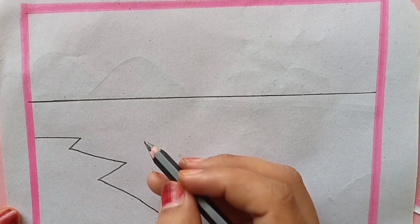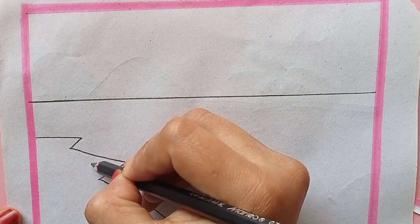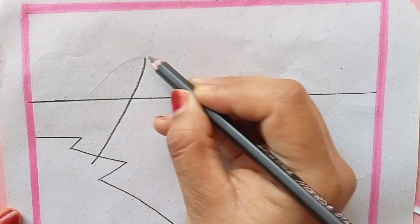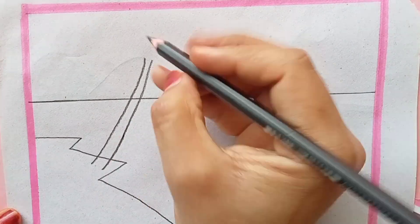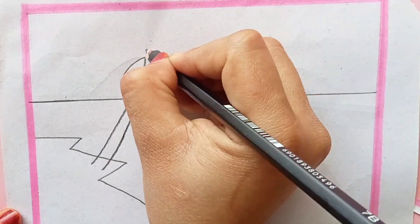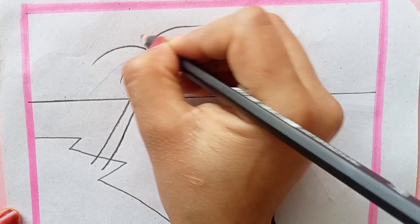You can use any pencil. By using a scale, I have drawn a straight line. And on the side I am drawing the brink of the river, and on that brink I am drawing a coconut tree just like this.